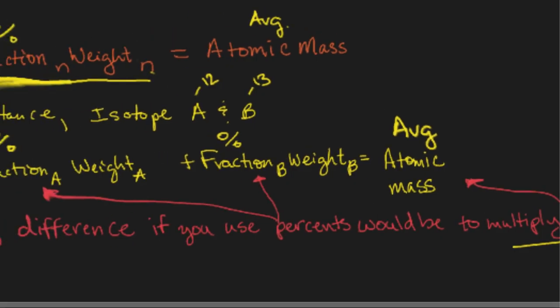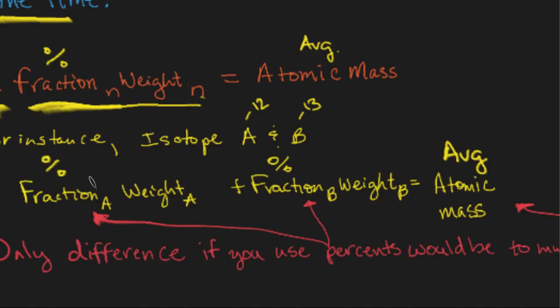There's a couple ways these problems can be given to you. You can either be given both the fraction and the weight of each isotope, and you just multiply and add them together to get the average atomic mass. Or you might be given the percentage, do the same concept. Finally, they might give you the average atomic mass, the different weights, and ask for the percentages. Those are the three types of problems you might see.